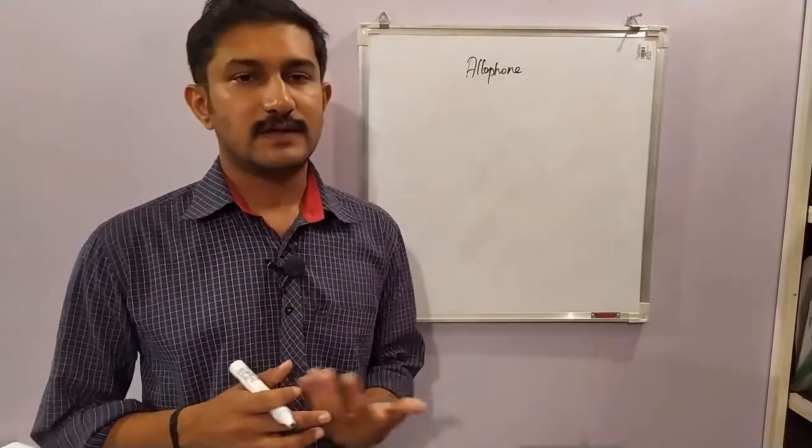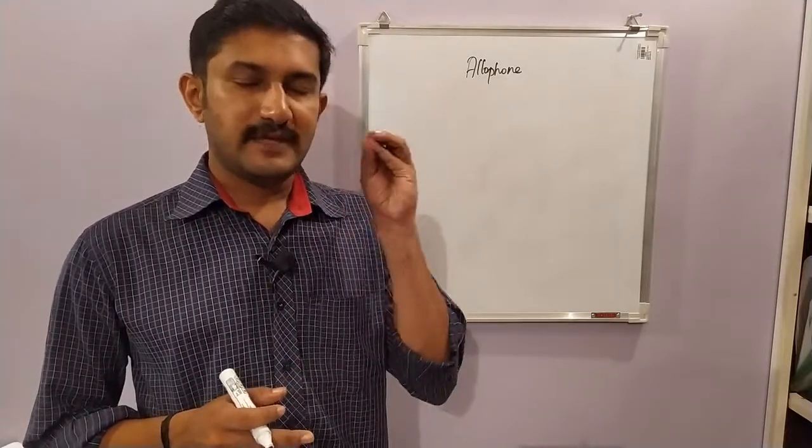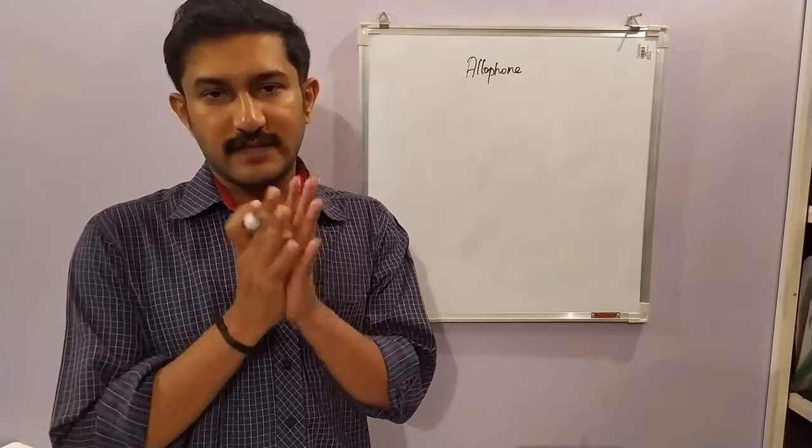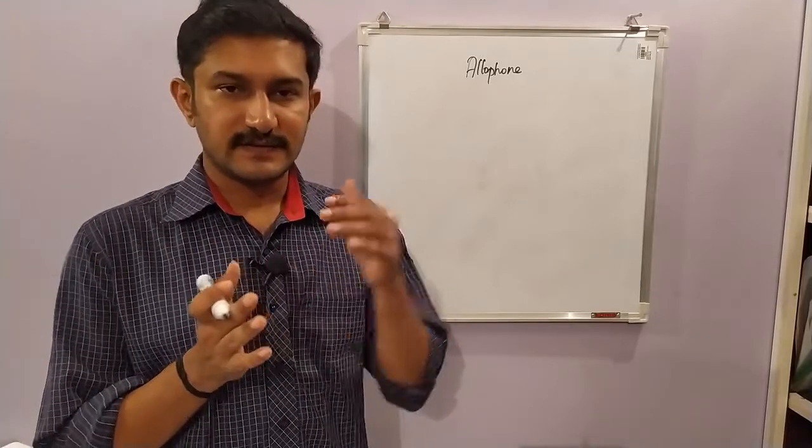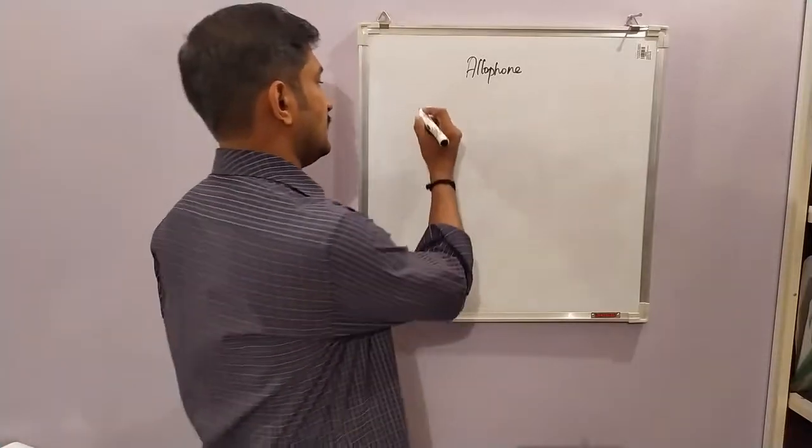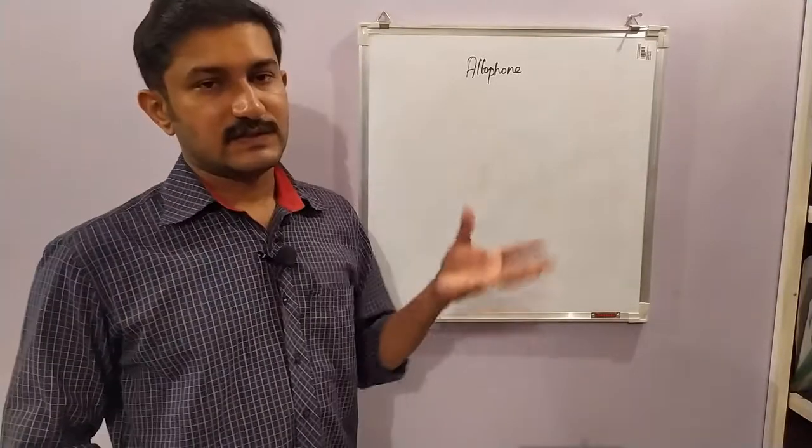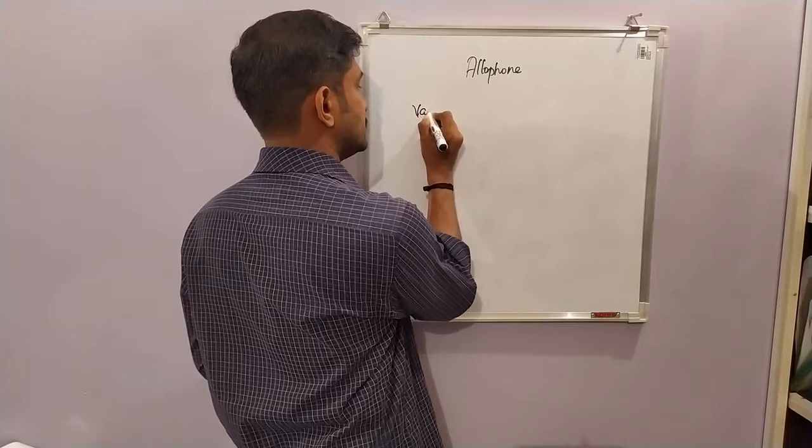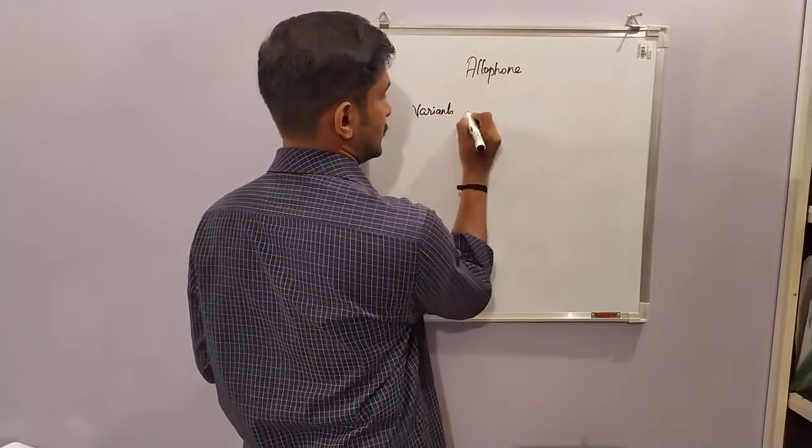Coming to allophones, we've discussed phonemes and minimal pairs. A phoneme is the minimal unit in the sound system and is distinctive and contrastive. An allophone is the variance of a phoneme - it refers to variance of a phoneme.